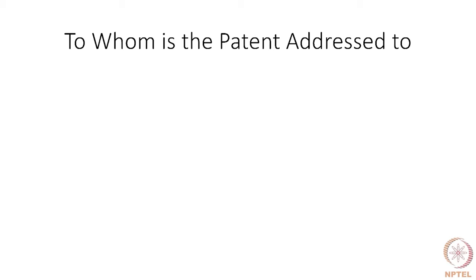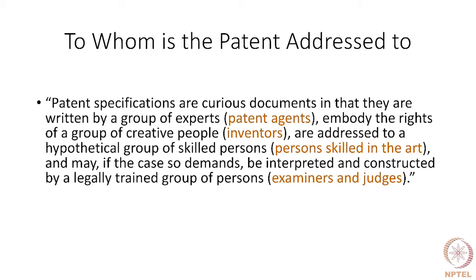To whom is the patent addressed? The patent is addressed to a variety of people. Patent specifications are curious documents in that they are written by a group of experts — patent agents — embody the rights of a group of creative people — inventors — are addressed to a hypothetical group of skilled persons whom we call the persons skilled in the art, and may, if the case so demands, be interpreted and constructed by a legally trained group of persons — examiners and judges.